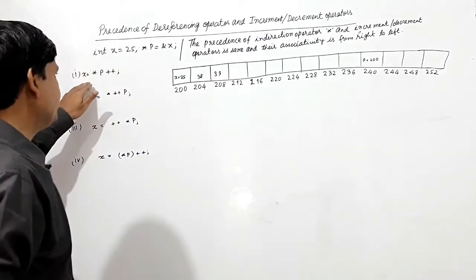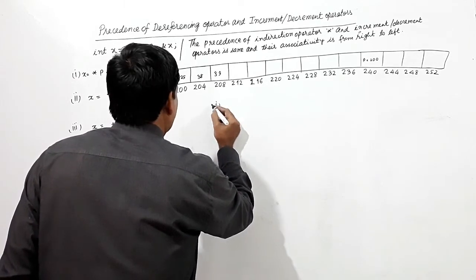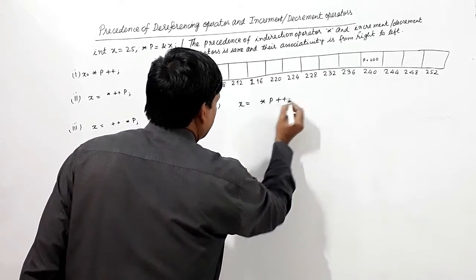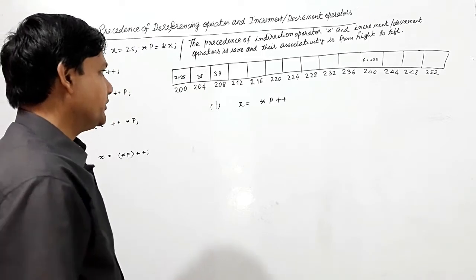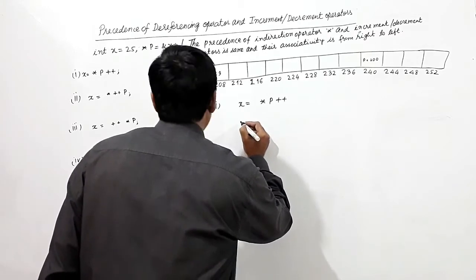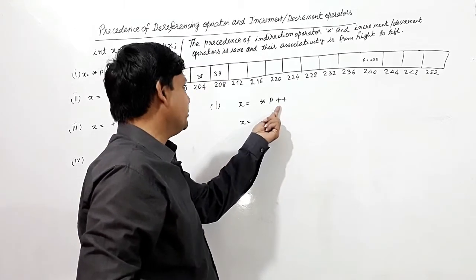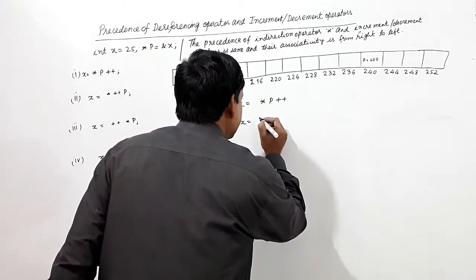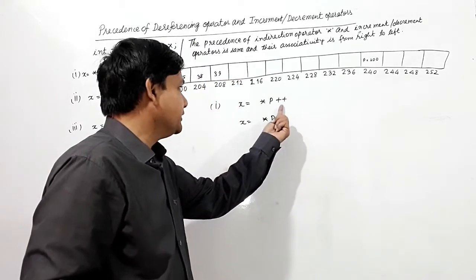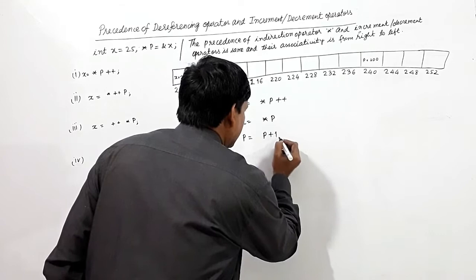Now we shall see the first question: what will happen with `x = *p++`? Because this is a post-increment operator, it means first x is equal to *p — we read the value at p — and then we increase the pointer's value. So x is equal to *p, and now we are increasing p's value: p = p + 1.